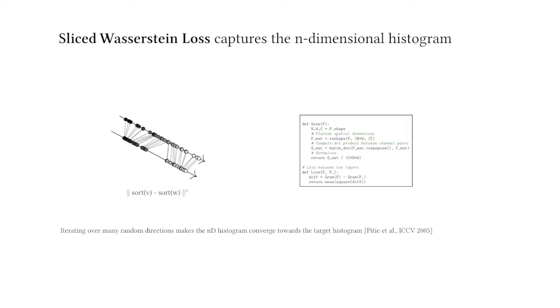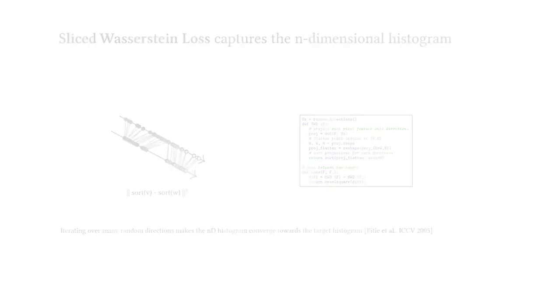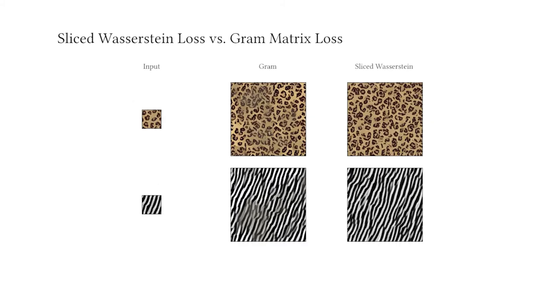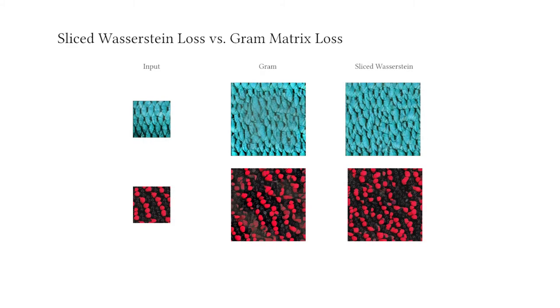Replacing gram matrix loss with our loss can be achieved in a few lines of code we provide with our paper. Synthesizing using this metric instead of gram solves the reported problems of the gram matrix loss, without combining multiple loss functions. This new building block can thus be seen as a drop-in replacement, at the cost of a small added complexity.